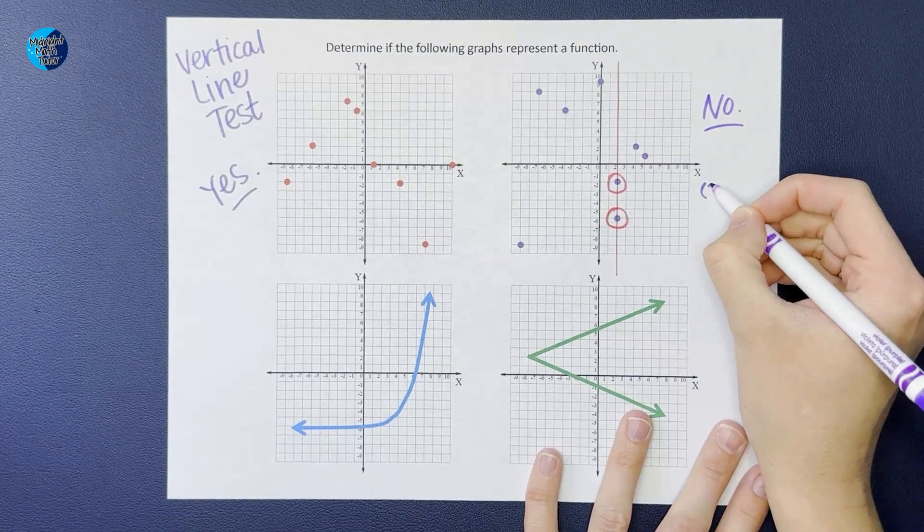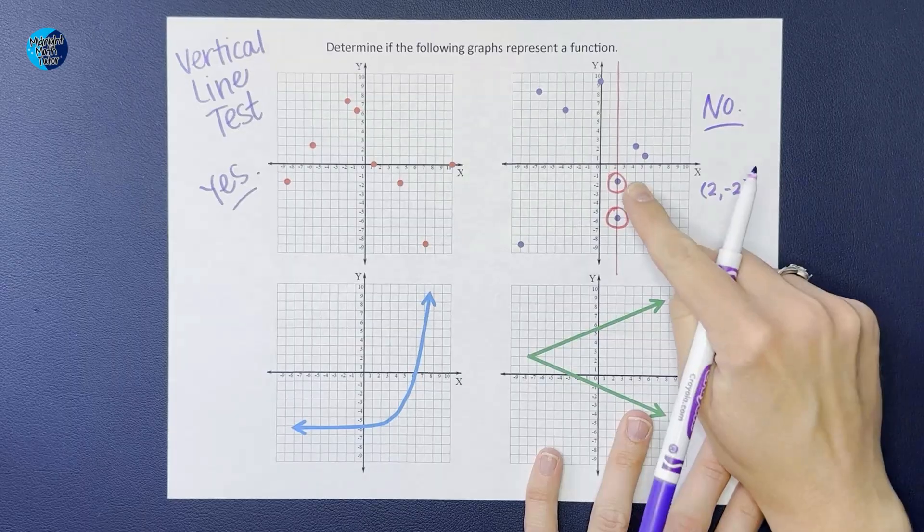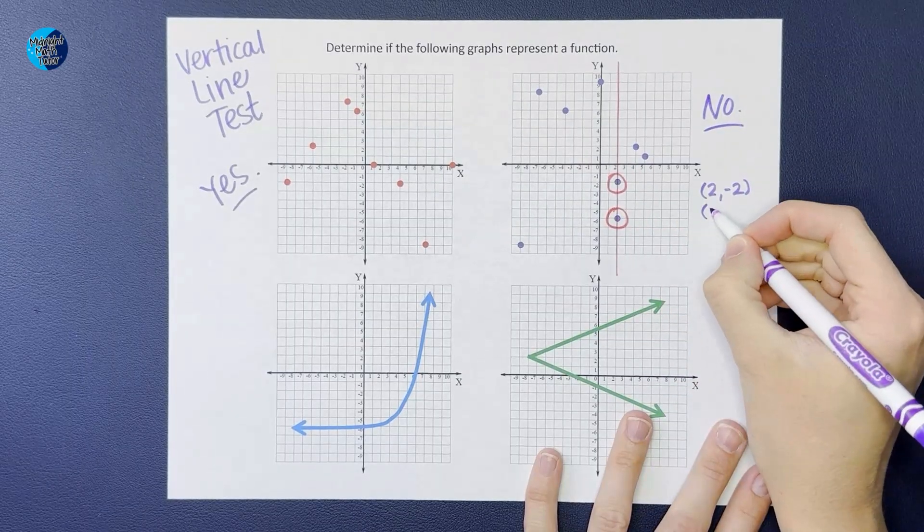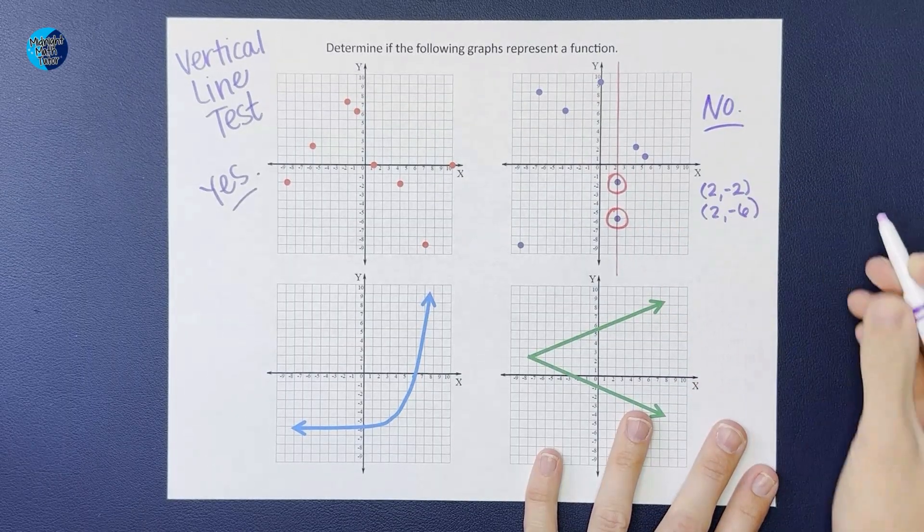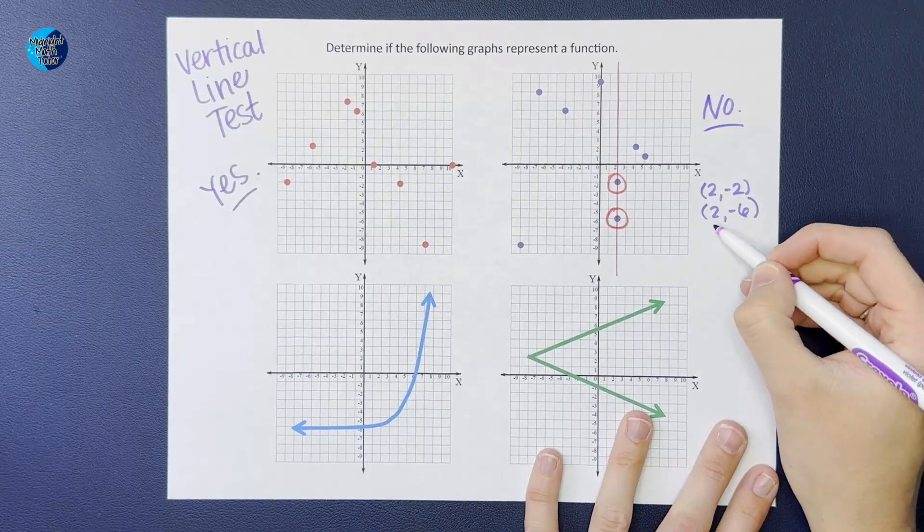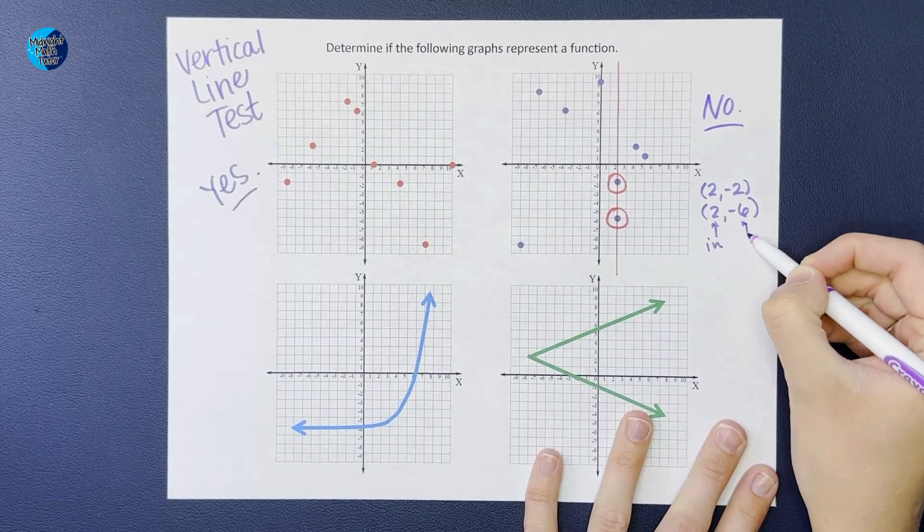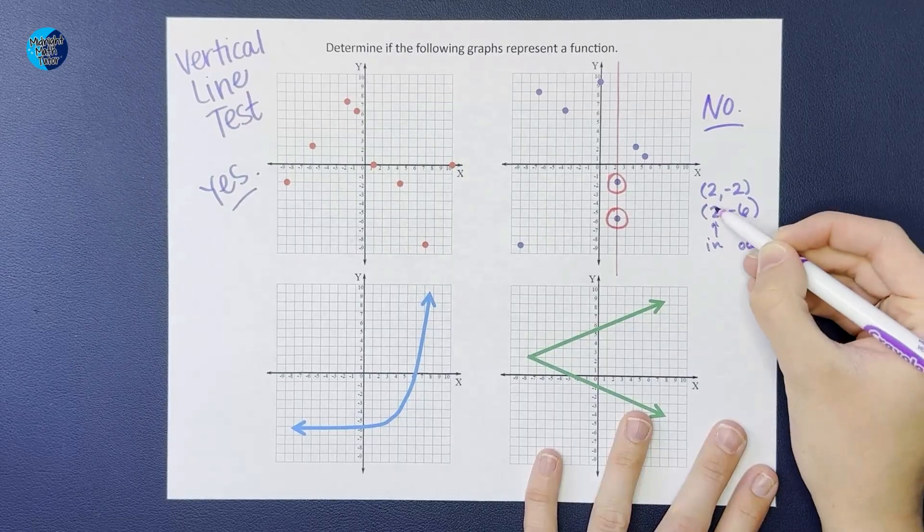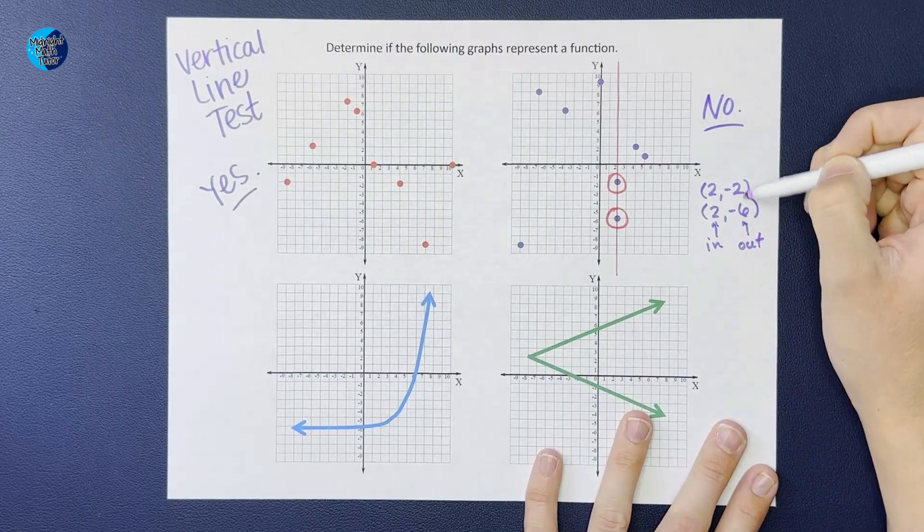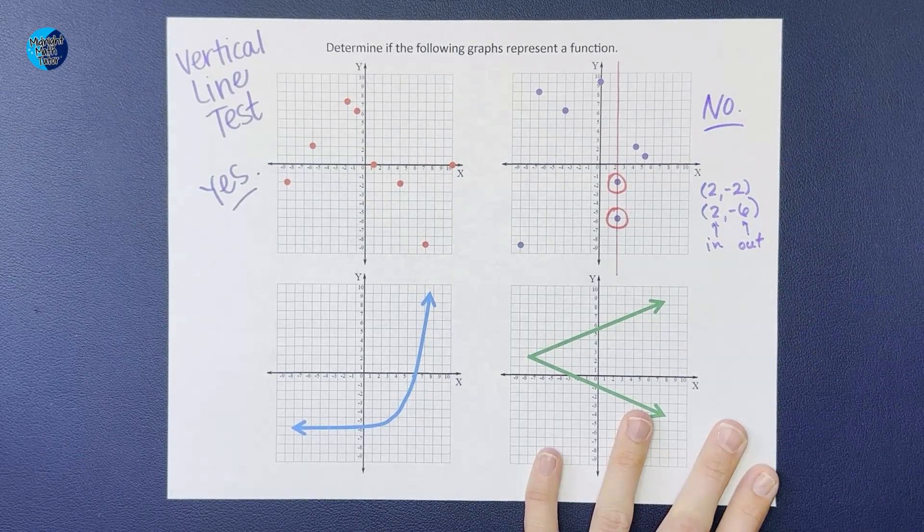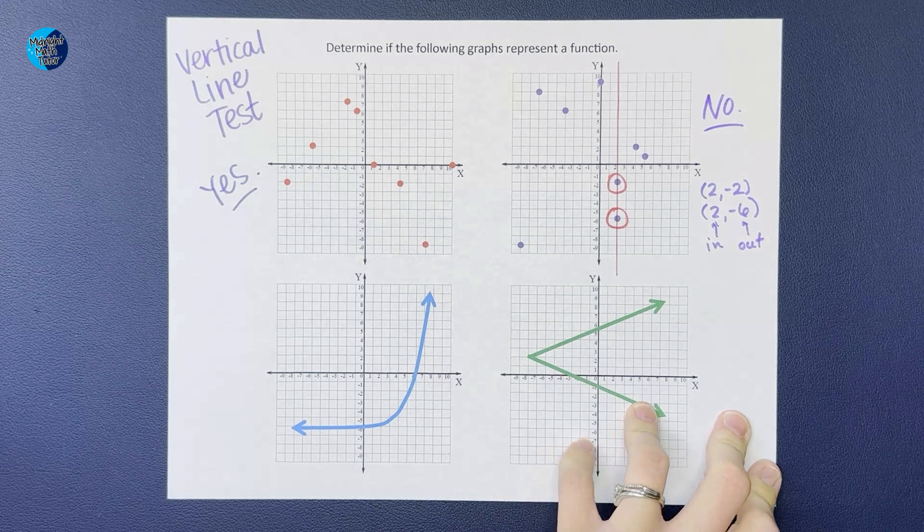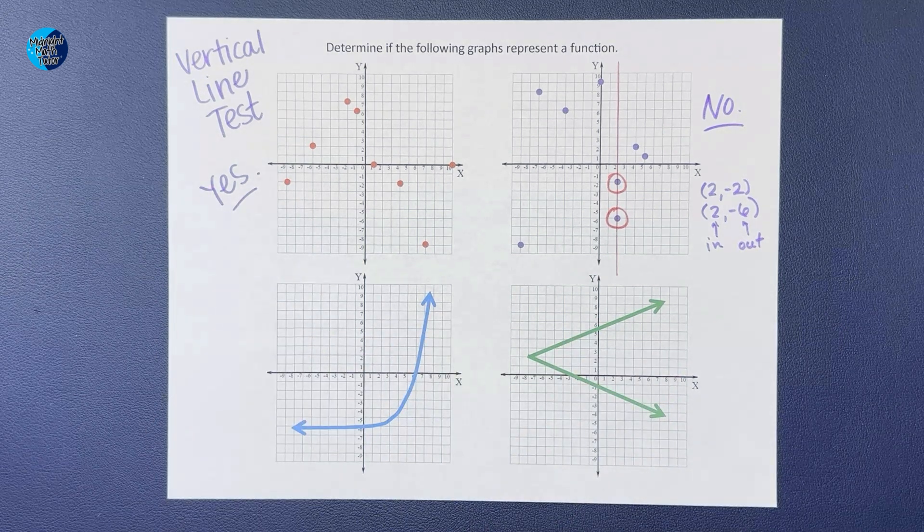If I were to write the ordered pairs of these points, it would be (2, -2) for that one and (2, -6) for that one. And you see that this is my input and this is my output, so my input of 2 has two different outputs, which means it's not a function. It's still a relation but it's not a function.